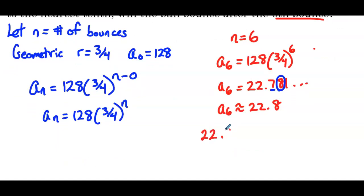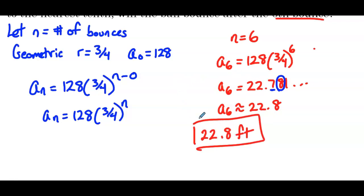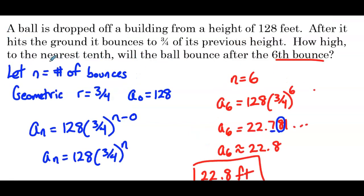So to the nearest tenth, the ball will bounce 22.8 feet. This example required a calculator and rounding. We also had another case where we started at n equals zero, not n equals one — and that's going to happen more frequently in word problems, because 128 feet is where the ball started before any bouncing, and we defined n to be the number of bounces. So n is zero at 128 feet.